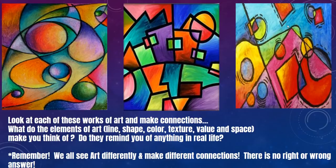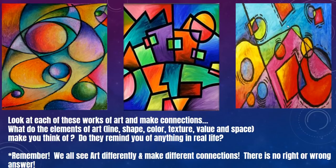When you look at the image on the left and notice the spheres, many students have shared that they make a connection with the planets or the solar system, and some of the lines might remind them of how they orbit. Other students have shared that this image reminds them of bowling. Remember, we all see things differently, and there's no right or wrong.